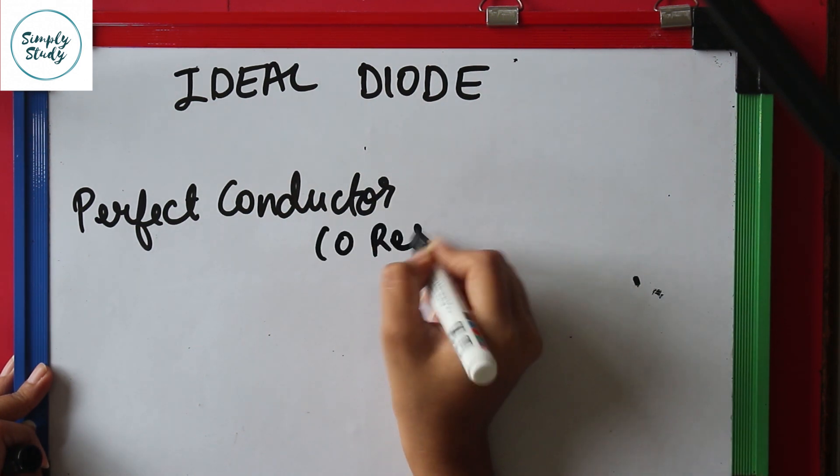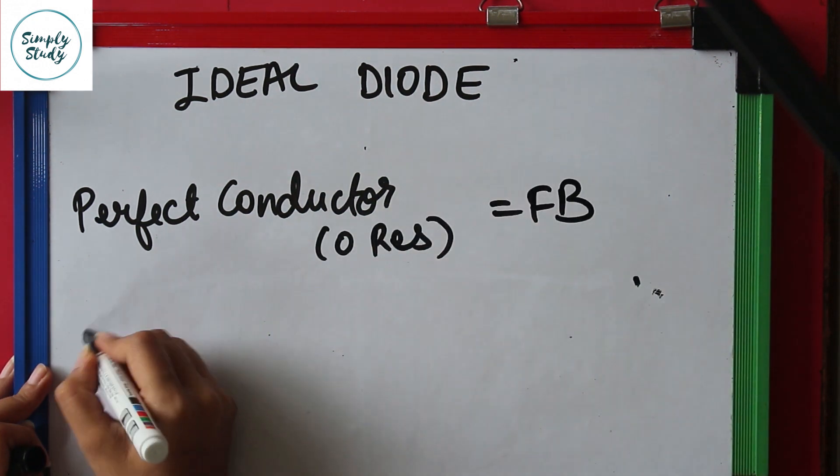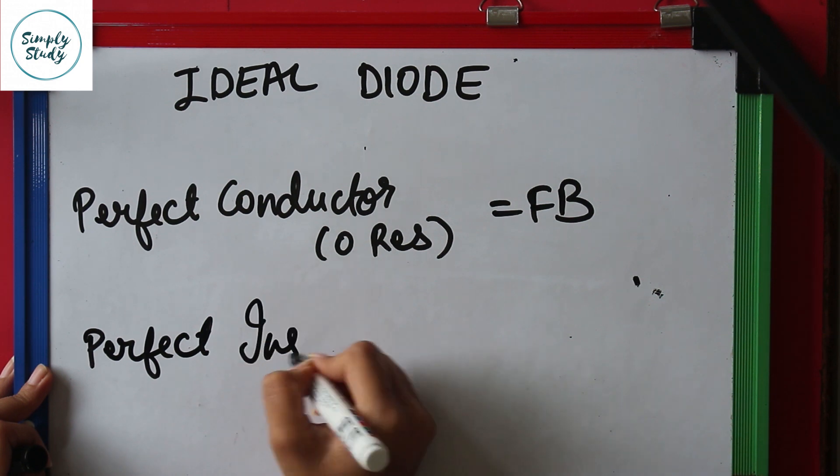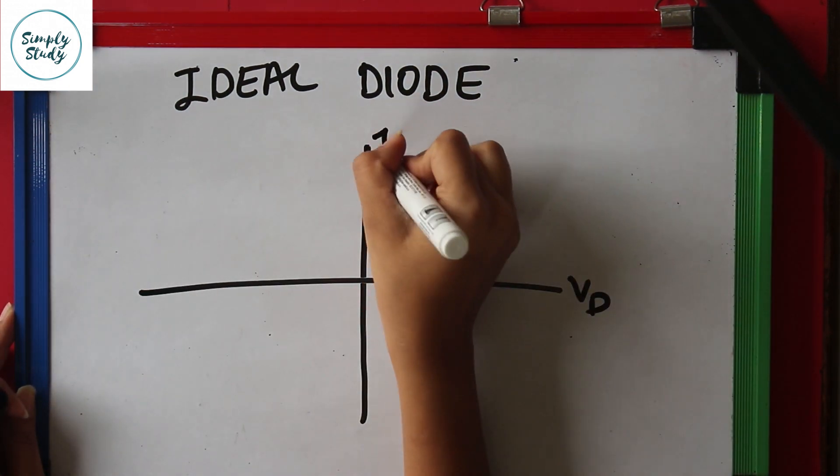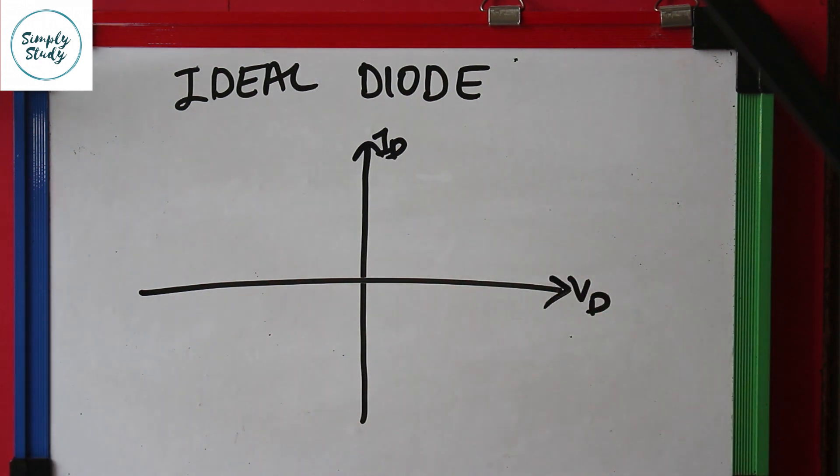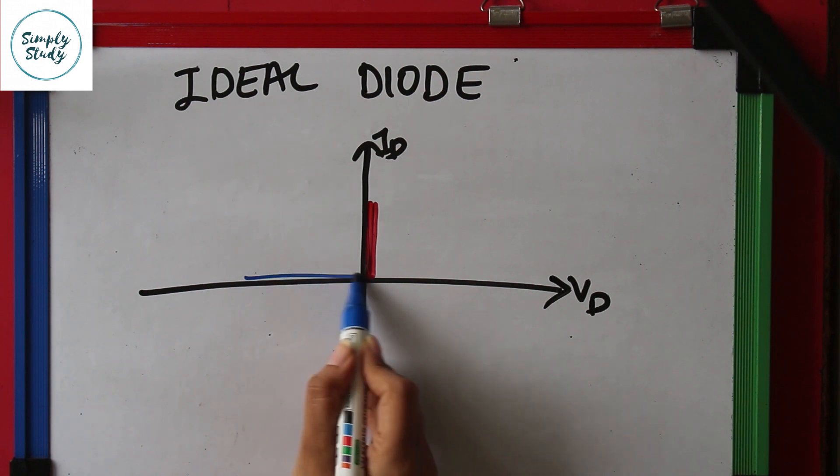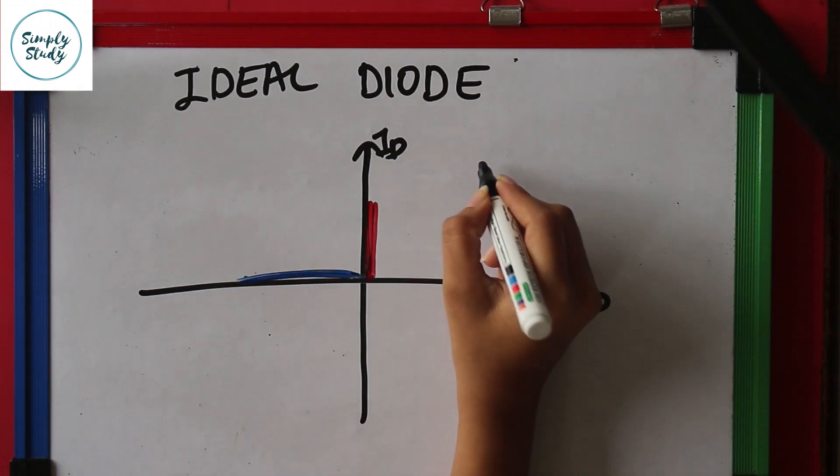It is a perfect conductor with zero resistance in forward bias circuit, and it is a perfect insulator with infinite resistance in reverse bias. So the graph of current versus voltage of an ideal diode looks like this. Hence a diode behaves like a switch.